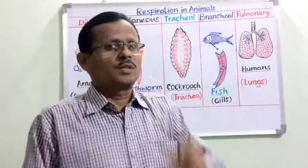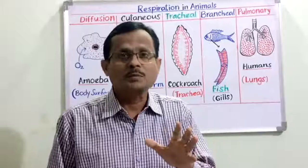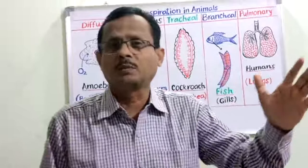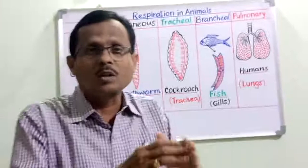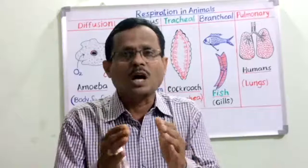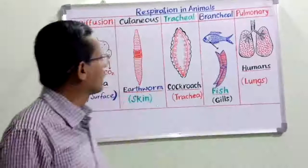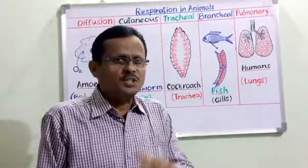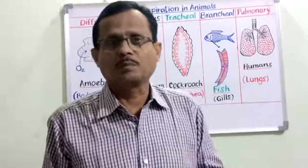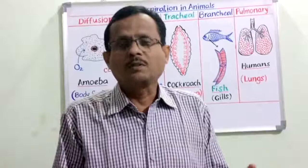Let us focus on respiration in different animals, starting from the protozoans to the highest evolved animals — that is mammals, that is human beings. We have different types of respiratory systems that have been developed in all organisms in the course of evolution. The first type is the diffusion process in single-celled organisms such as amoeba, paramecium, or euglena — the protozoans broadly.